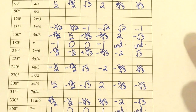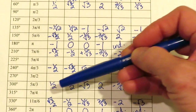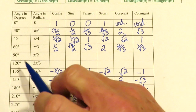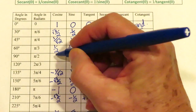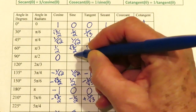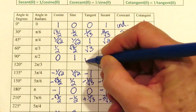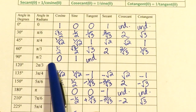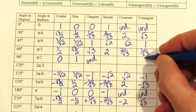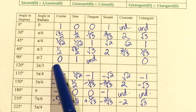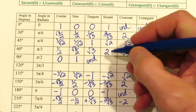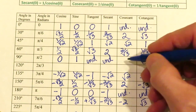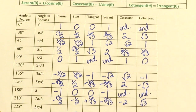225 and 315 degrees also match up with 45 in the same pattern. At 90 degrees, x is 0 and y is 1, so tangent is undefined because you'd be dividing 1 by 0. Cotangent is 0 because cosine is 0 over 1. Secant is undefined because you'd be dividing by 0, and cosecant is 1 because the reciprocal of 1 is 1.